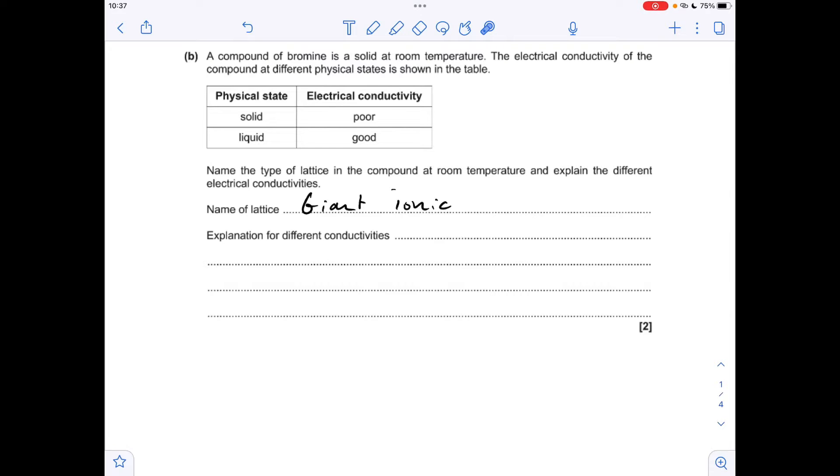What's the explanation for the different conductivities? It's all down to the ability of ions to move. In the solid state the ions can't move so it has poor electrical conductivity, whereas in the liquid state the ions can move. It's not to do with electrons, it's ions.